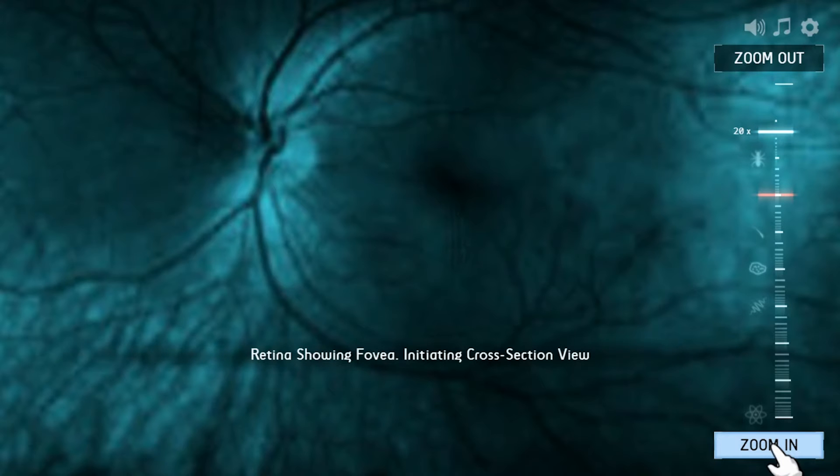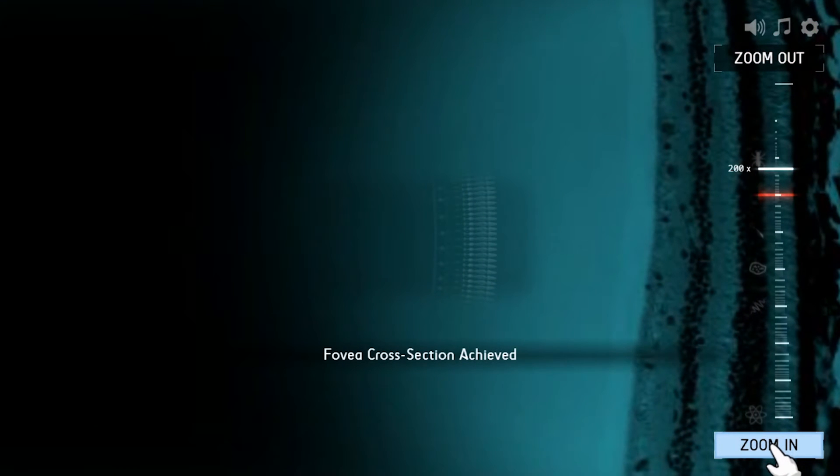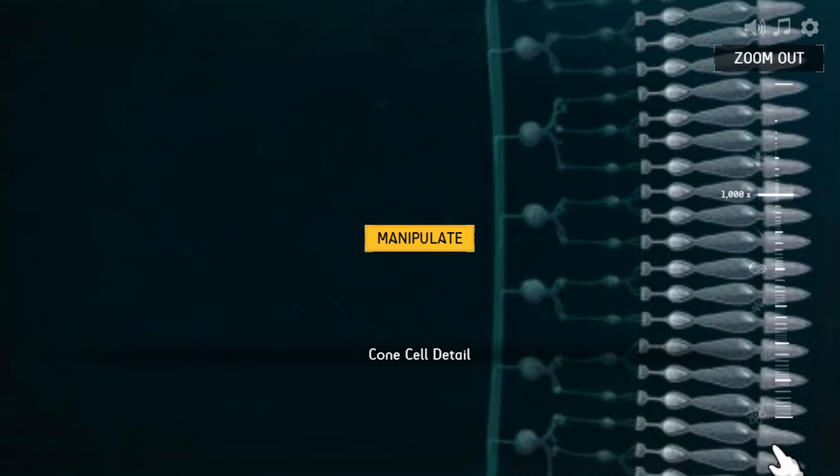In this game, you have to fix Alexis 8's color vision by zooming into her eye and activating the cone cells in her retina.